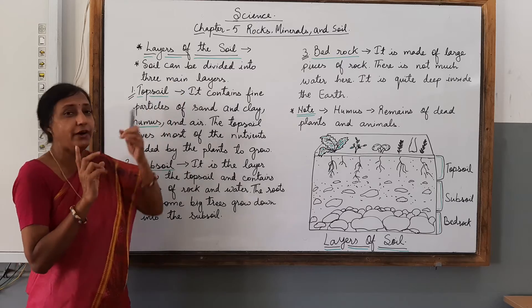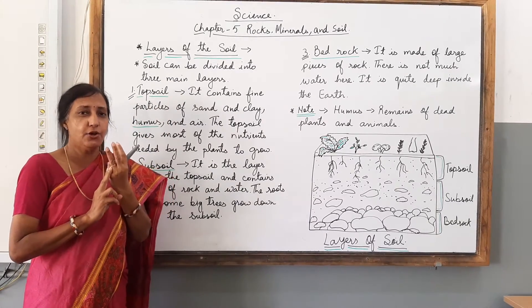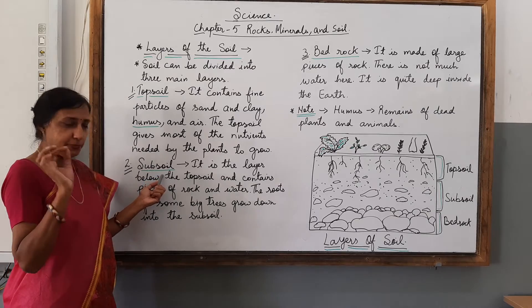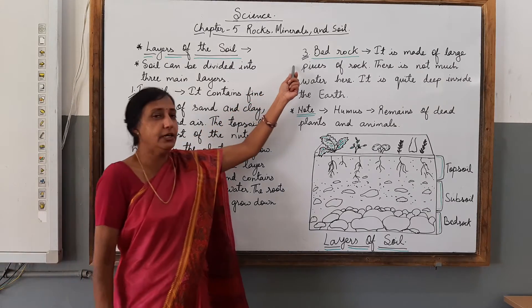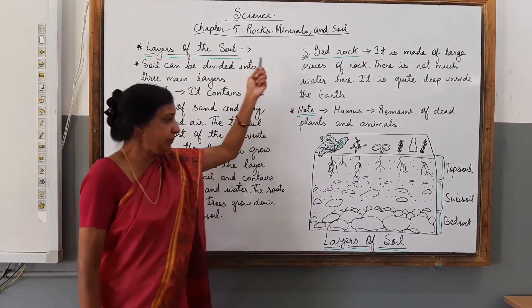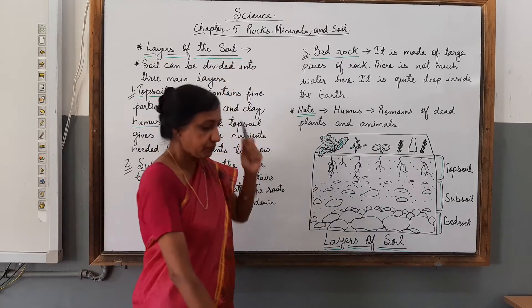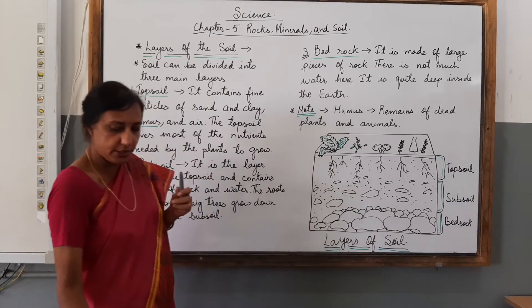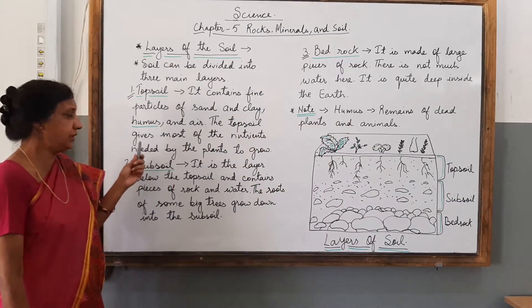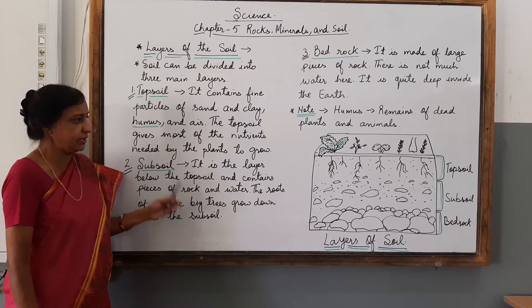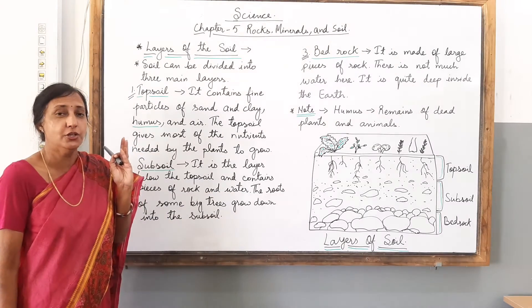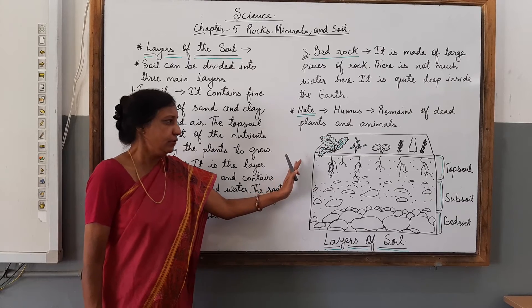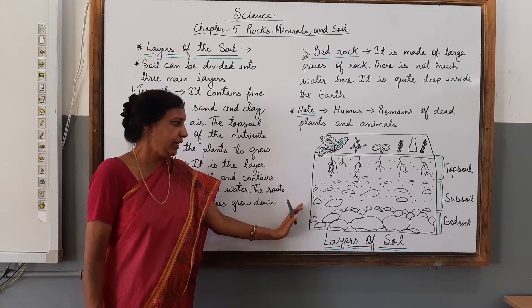Remember that soil is divided into three layers. One is the topsoil, second is the subsoil, and third is the bedrock. Bedrock has a large amount of rocks. You are now able to understand three kinds of layers of the soil and what things are present in the topsoil, subsoil and bedrock.